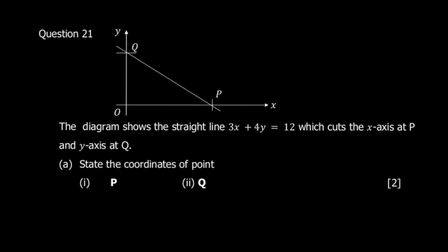Hey guys, welcome back. Let's finish the paper — we left with only five questions. So question 21: the diagram shows a straight line. The equation for the straight line is 3x + 4y = 12. It cuts the x-axis at point P and the y-axis at point Q. Part A says: state the coordinates of points P and Q.